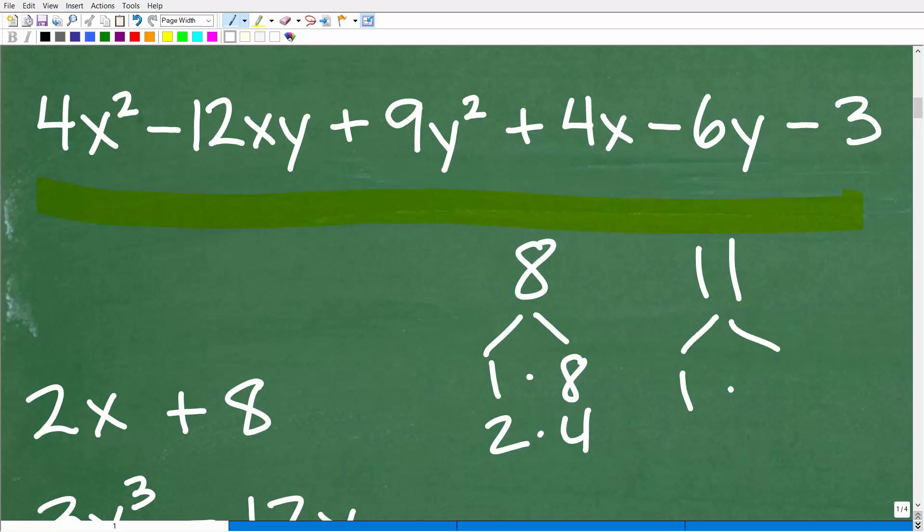Now, 11, the only factor we have is 1 and 11. So anytime you have a number where the only factors you have is 1 and that number, this is what we call a prime number. And you can have that situation with polynomials as well, right? So in other words, this is not factorable. It just has 1 and itself. So that would be prime.